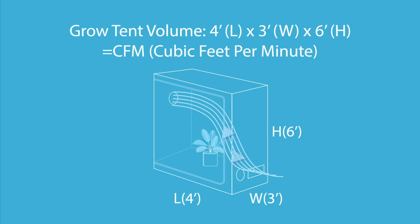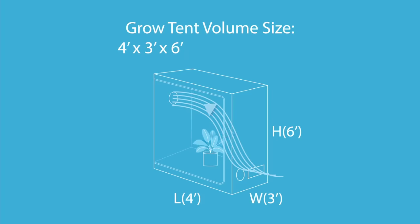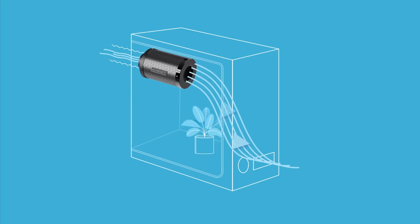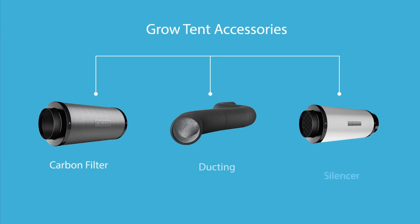A 4x3x6 grow tent has a volume of 72 cubic feet. To exchange this tent's air once every minute, you would need a fan with a 72 CFM capacity or higher. Adding accessories, however, will restrict airflow in your grow tent, requiring a higher CFM rated fan in order to move the calculated air flow.